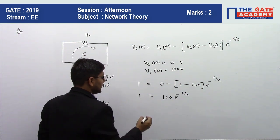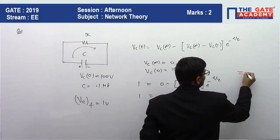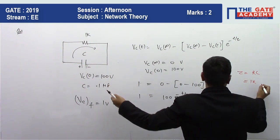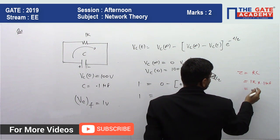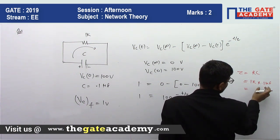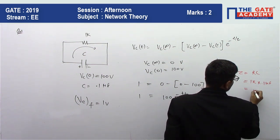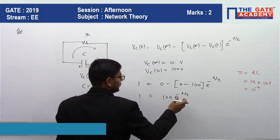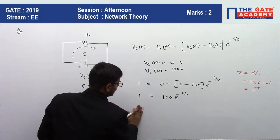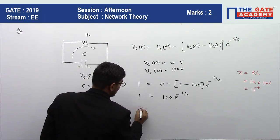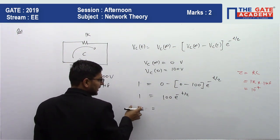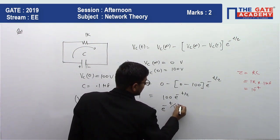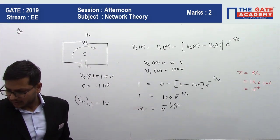The time constant tau equals RC. This is an RC circuit. R is 1kΩ and C is 0.1 microfarad. Kilo and micro cancel appropriately, giving tau equals 10 to the power minus 4 seconds. Substituting tau into the equation: 0.01 equals e to the power minus t divided by 10 to the power minus 4.